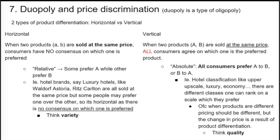For vertical product differentiation, two products are sold at the same price but all consumers agree one is preferred. For example, in hotel classification — upper upscale, luxury, economy — most people, if the price is the same, will choose the luxury option because there is a clear quality ranking that all consumers agree on. A helpful way to remember: horizontal means relative, on the same plane, you can choose either. Vertical means one is clearly on top — there is a consensus on quality and all consumers prefer the same one.